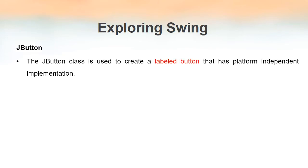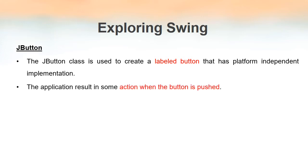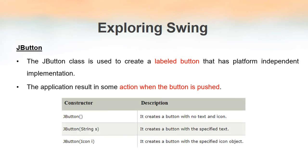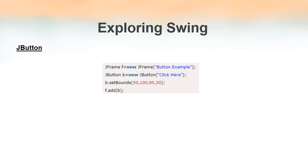The next component is JButton, used to create a labeled button with a platform-independent implementation. When the button is pressed, an action is generated. JButton has three constructors: the first takes no parameter and creates a button without a label; the second accepts a String, which becomes the button's label; and the third accepts an Icon, allowing a button to be represented by an image instead of text.